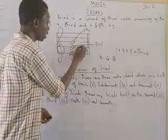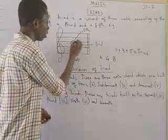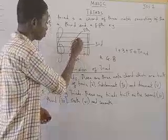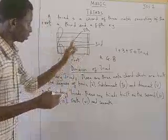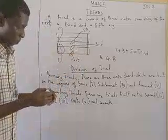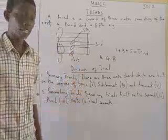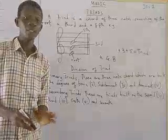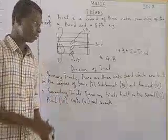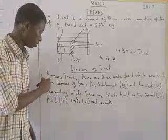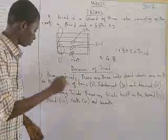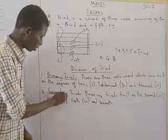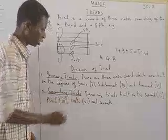Now we have different triads. We have divisions of triads and they have been divided into two categories. The first one is primary triad and the second one is secondary triad.